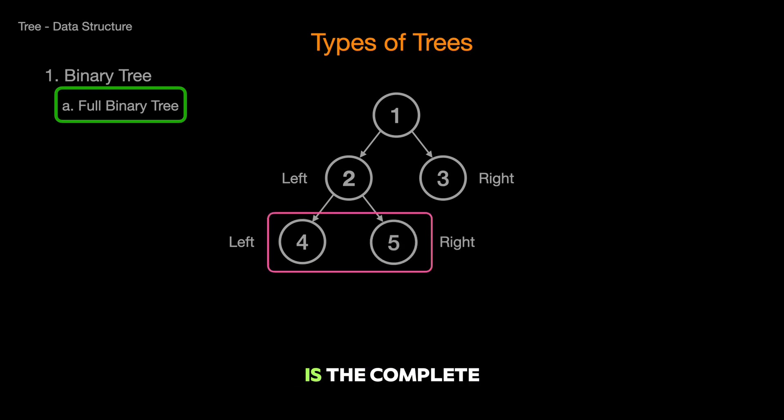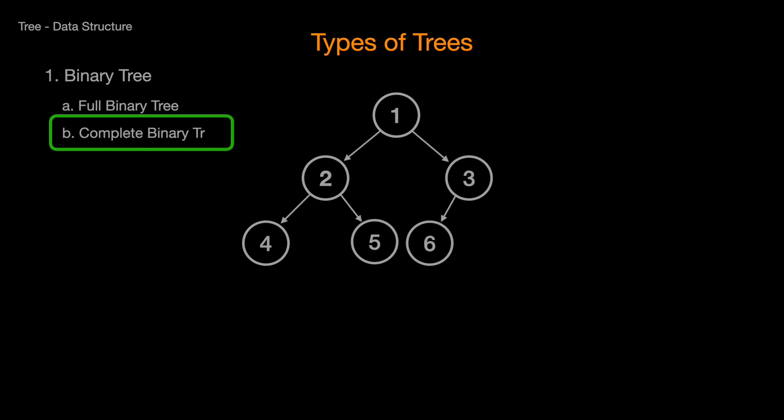Next in line is the complete binary tree. This tree fills up from left to right, making sure there are no gaps in each level before moving on to the next. Imagine a parking lot that fills up row by row. That's your complete binary tree.